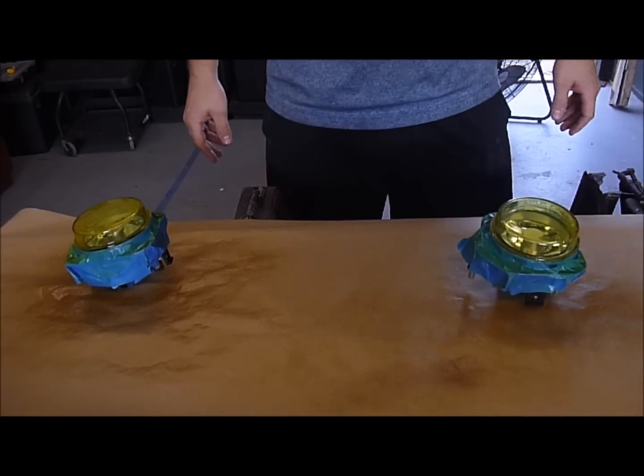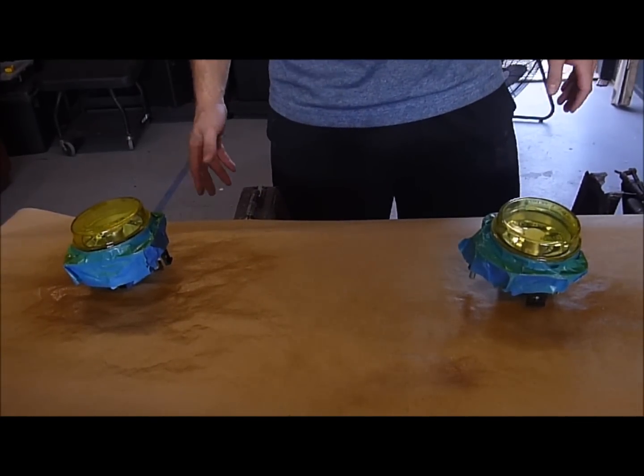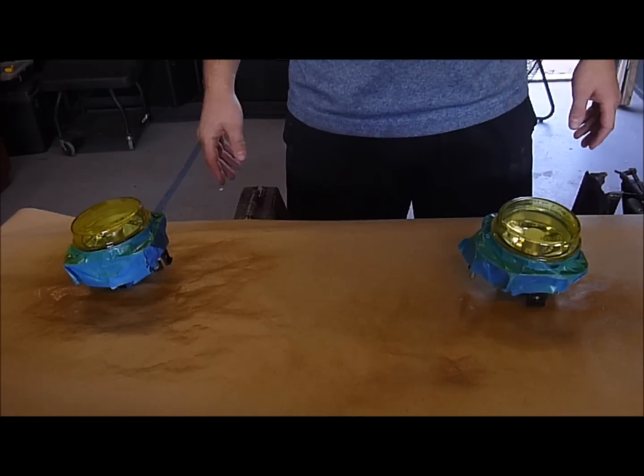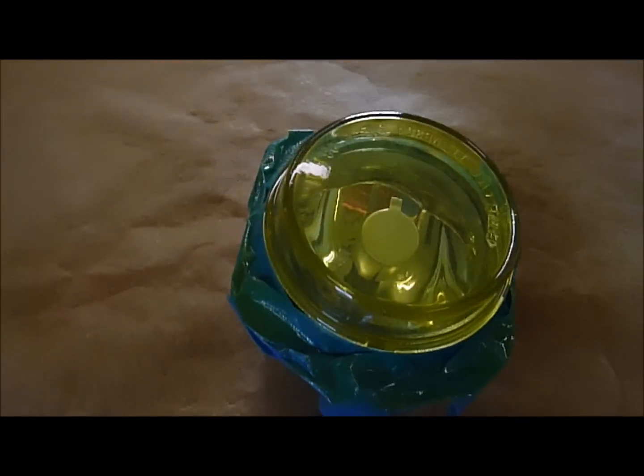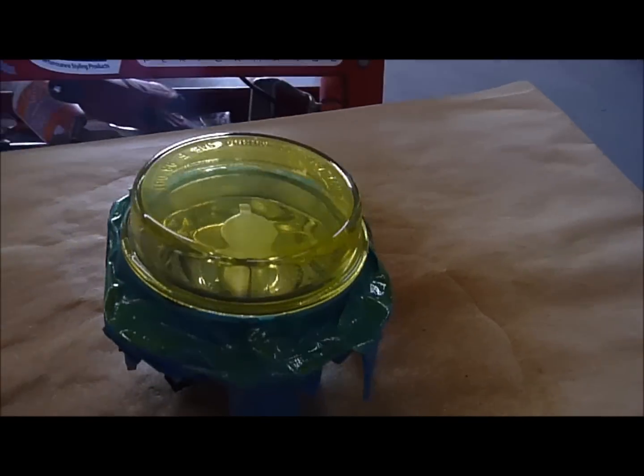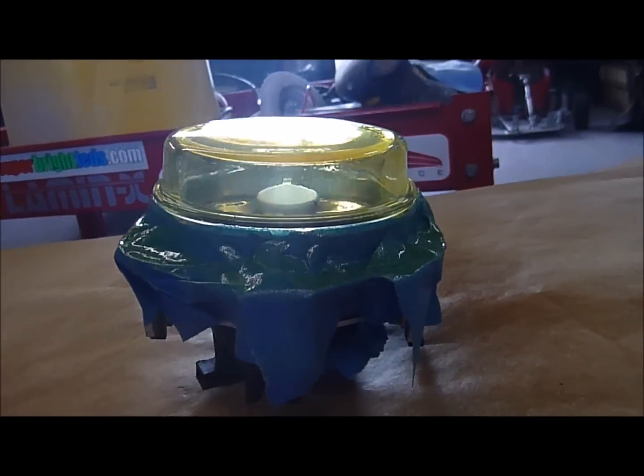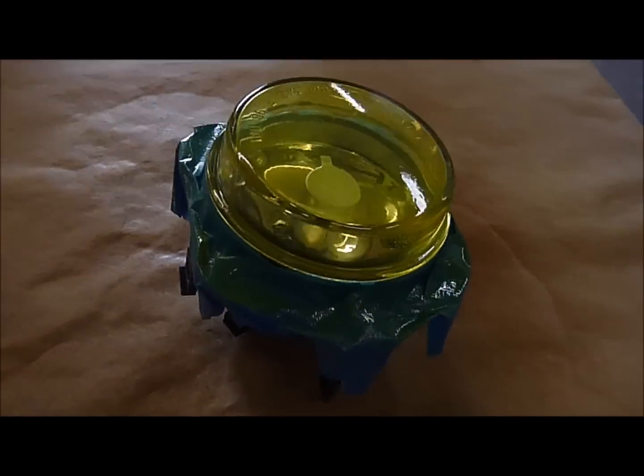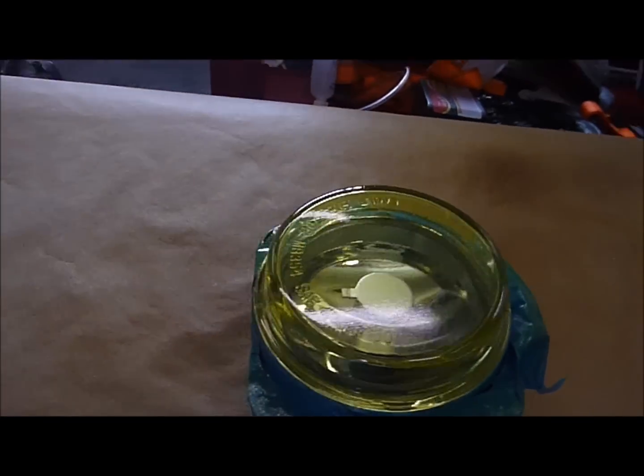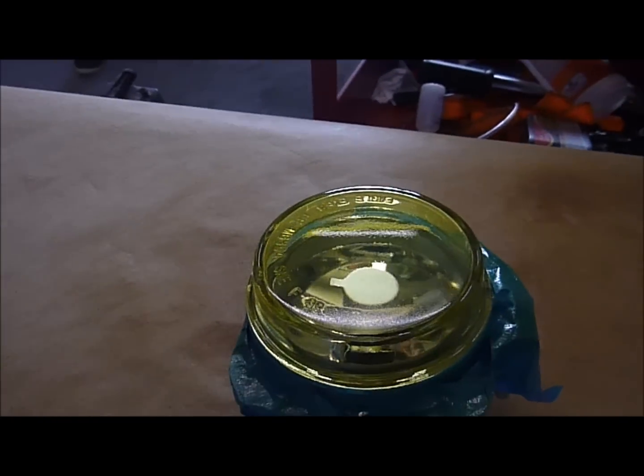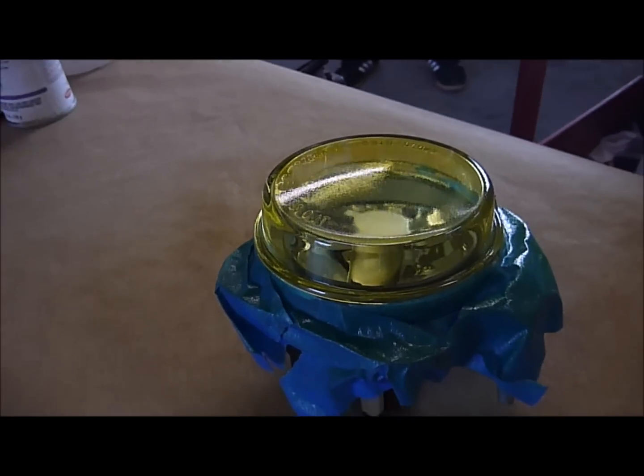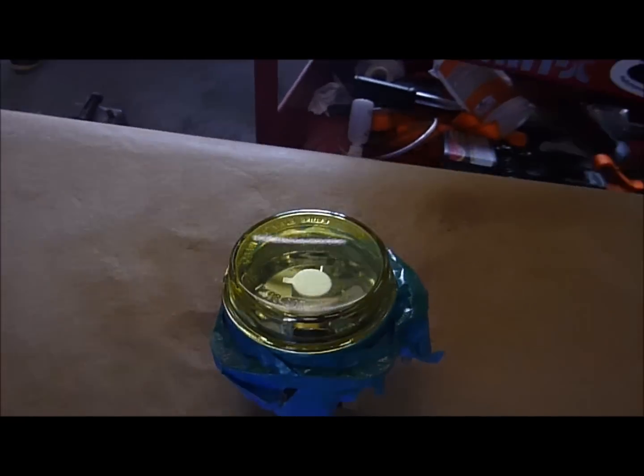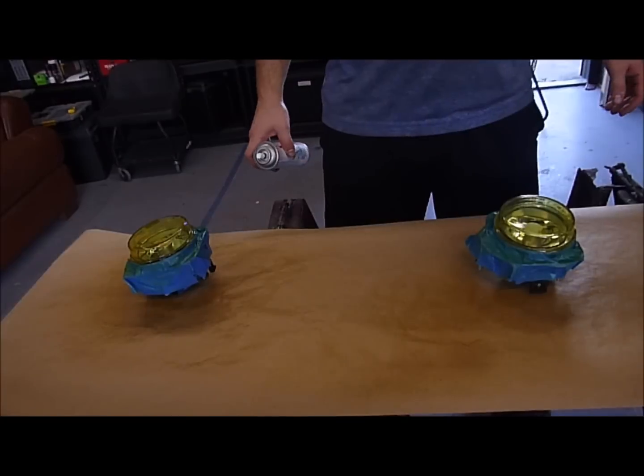All right, so the first coat, we're going to let that dry for about 10 to 15 minutes. Then, we'll move on and do the second coat. All right, so you can see after one coat, it's starting to get some nice look. It's still transparent. But, just got a slight tint to it.